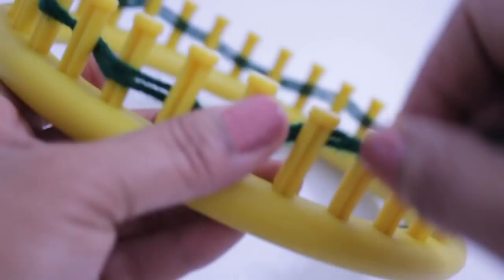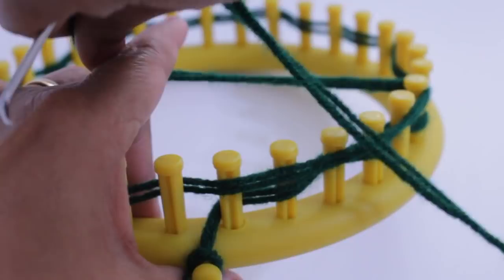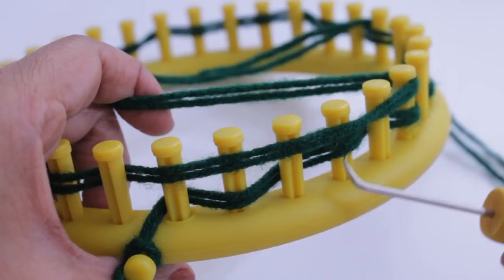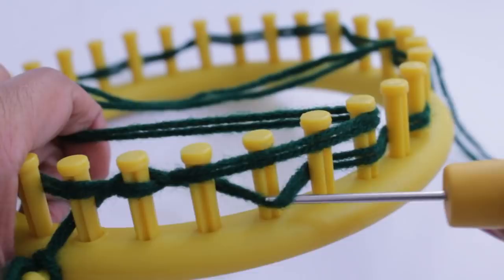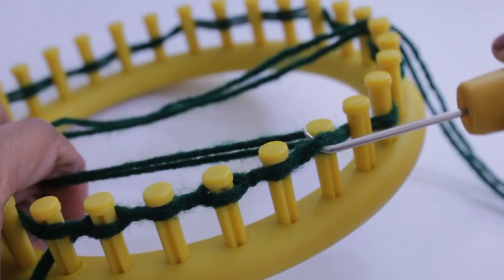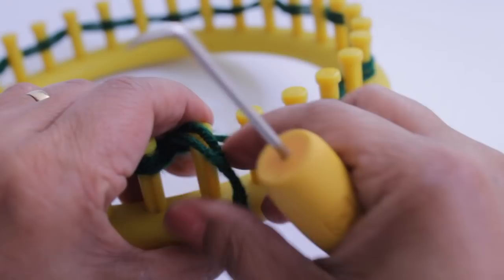Once you get back to row one, you're gonna take your yarn and lay it loosely over a few pegs. Hold it with your hand and then with your hook, you see that some pegs have two loops and some only have one. So you're gonna knit off the pegs that have two loops. And two loops because we're knitting with two strands as one is really four.